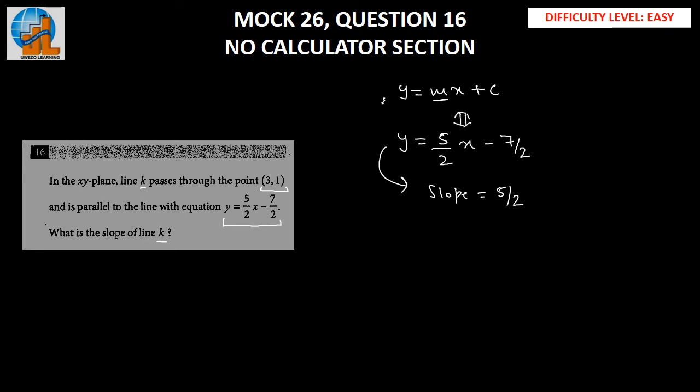Now, we know if two lines are parallel, their slopes are equal, which implies the slope for line k has to be equal to 5/2. Hence, 5/2 is the right answer.